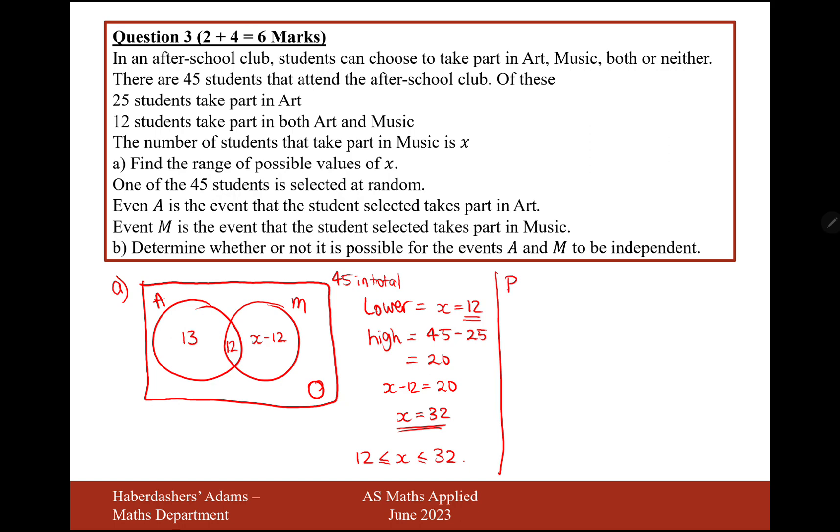So if we have two events that are independent, then the multiplication of those two events must equal the intersection of those two events. So let's do that.